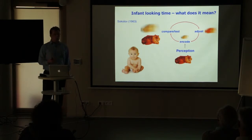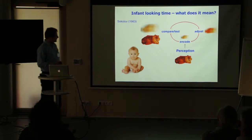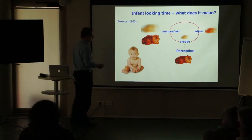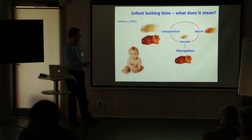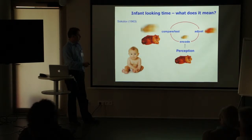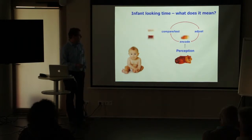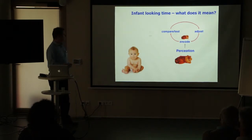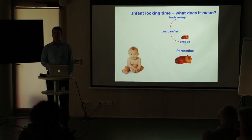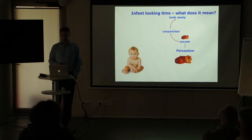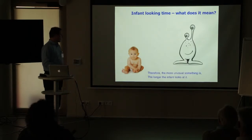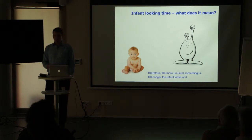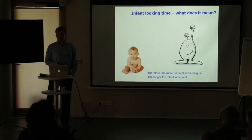To operationalize looking time, perhaps the most famous model is Sokolov's comparator model. The idea is that infants look at an object, build an internal representation, compare it with what they are looking at, and if there's a mismatch they adjust the internal representation. They cycle through encoding, comparing, and adjusting until the internal encoding matches, and then disengage. This explains why infants spend longer looking at something more unusual — they have to traverse the adaptation cycle more often.